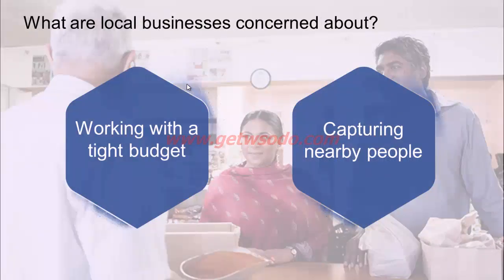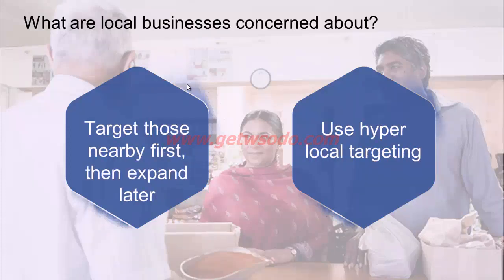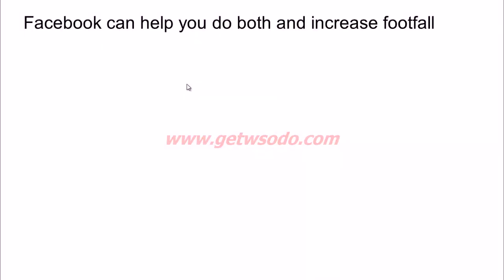What are local businesses most concerned about? More often than not, these offline stores have a tight budget to work with for their marketing, and they want to be most effective in capturing nearby people — people who are around them in that moment. To address these concerns, you need to effectively target those around your business first, then expand your targeting later. You would use what we call hyper-local targeting. Facebook can help you do both of these and increase footfall.